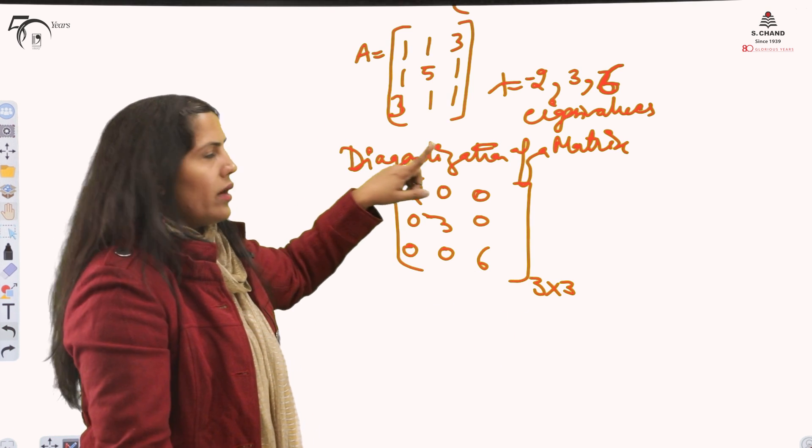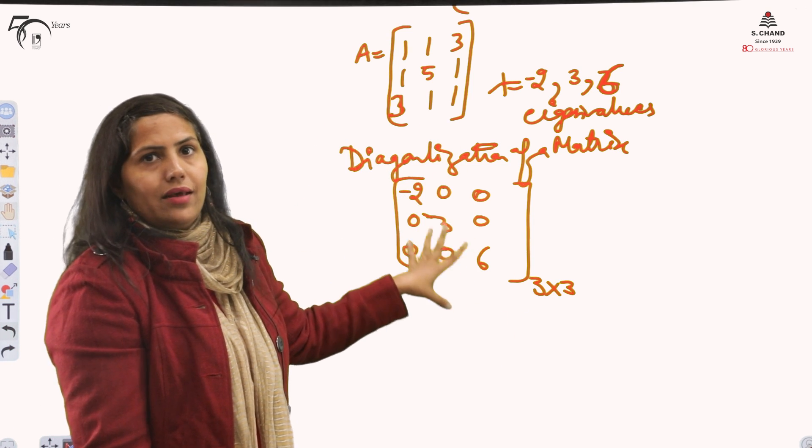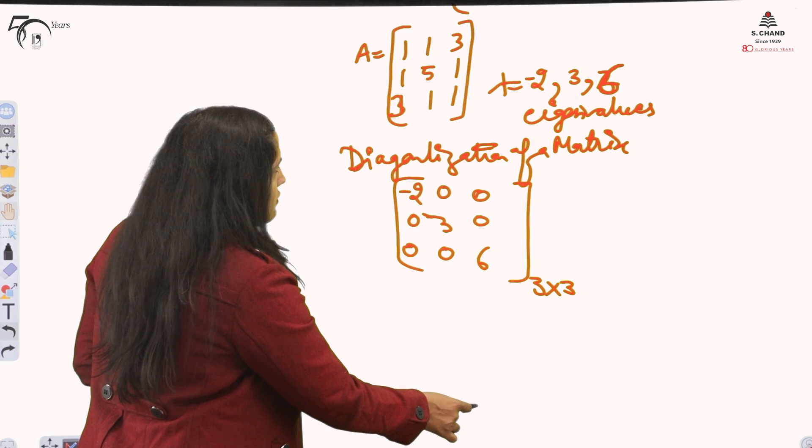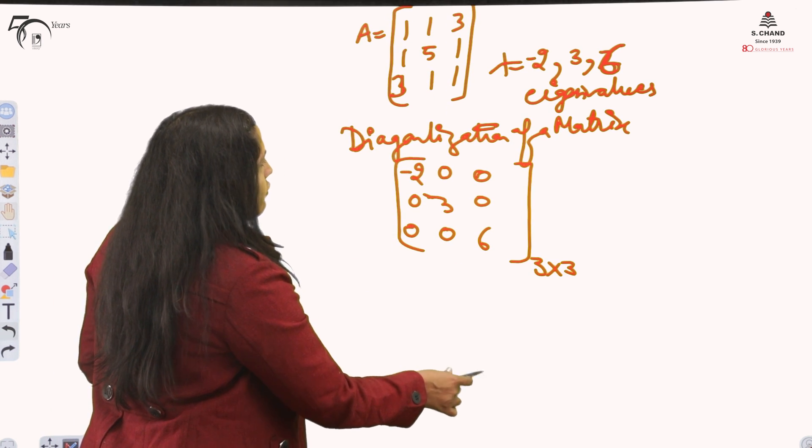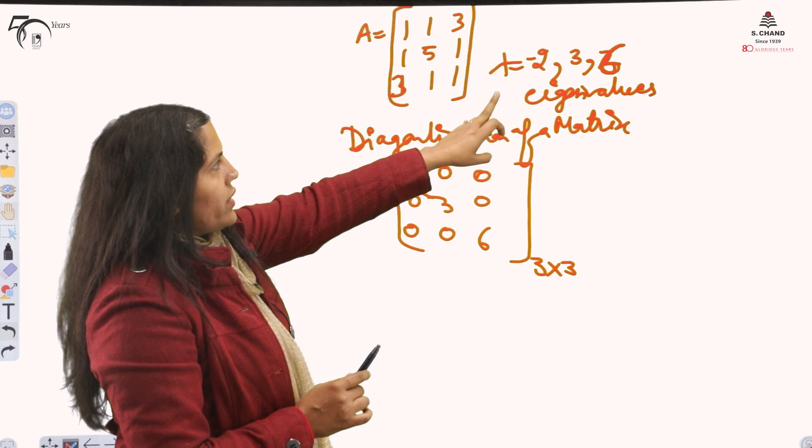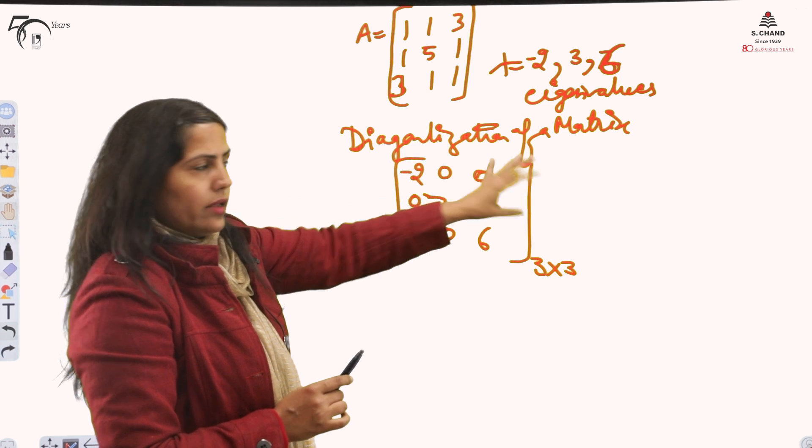This is how you diagonalize any matrix. There is a lengthy way also but if you have eigenvalues, this is how you can diagonalize and it's very easy. This is the easiest actually for diagonalization of a matrix. Now, corresponding to lambda minus 2, 3, and 6, we will find the eigenvectors.